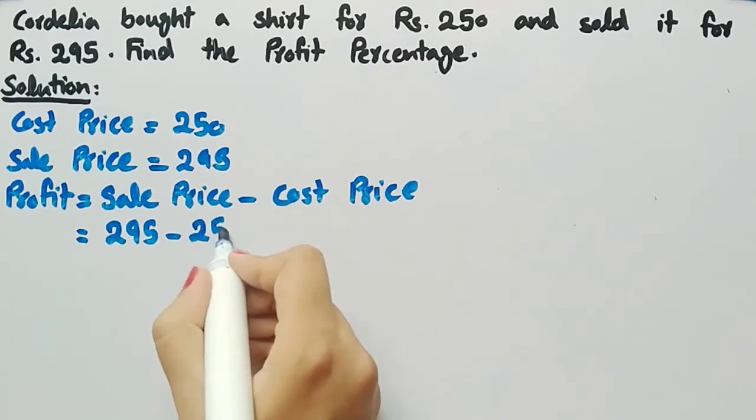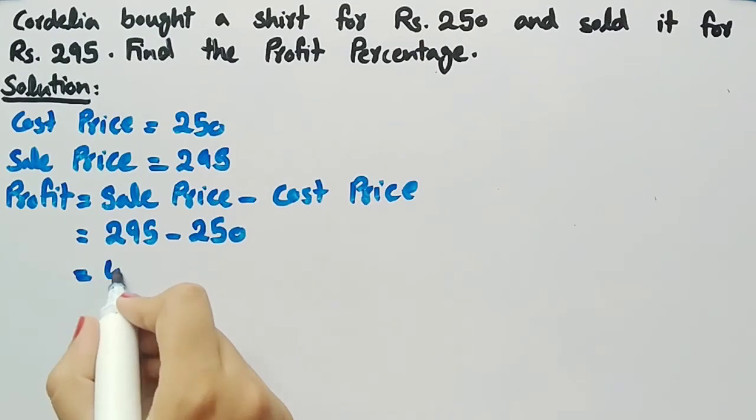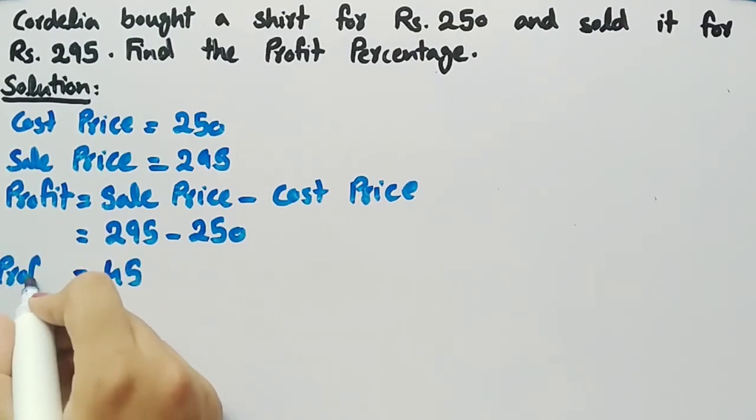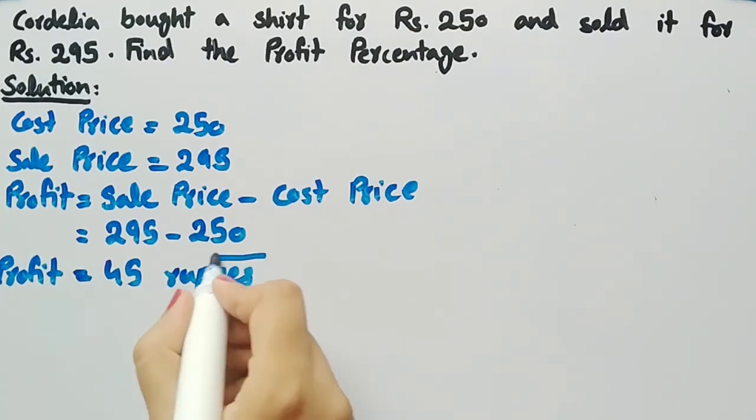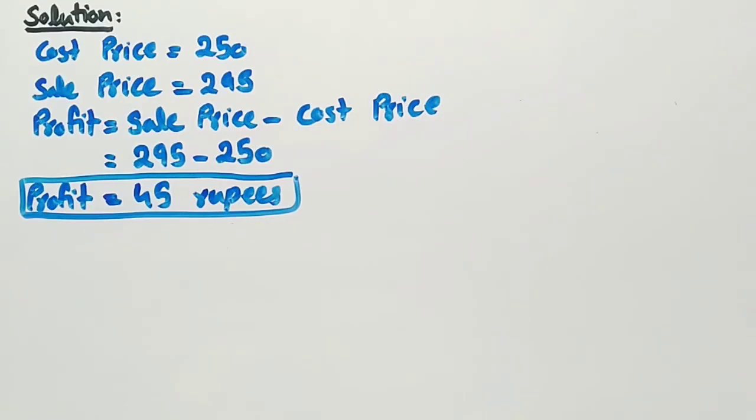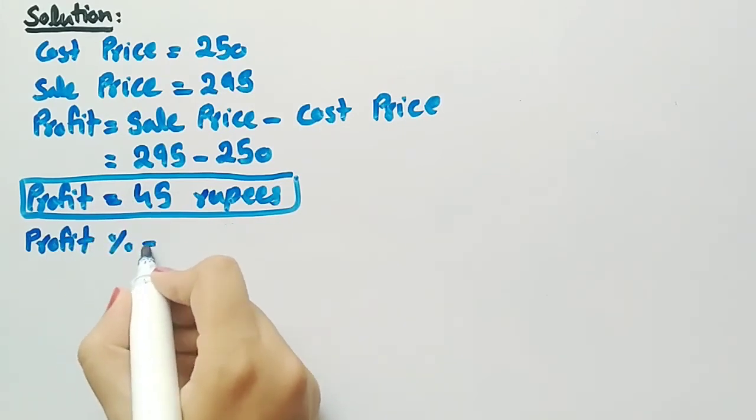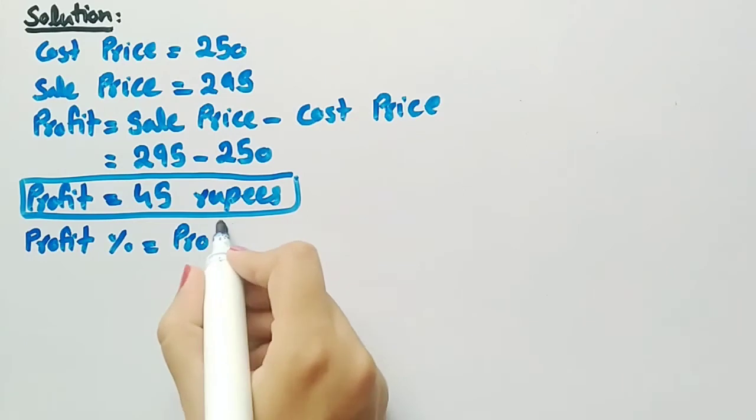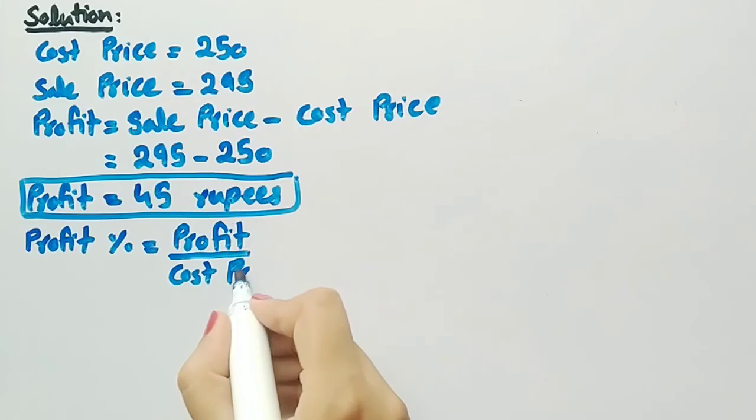295 minus 250 is equal to 45, so profit is 45 rupees. Since we have to find profit percentage, the formula for profit percentage is profit percentage equal to profit divided by cost price multiplied by 100.